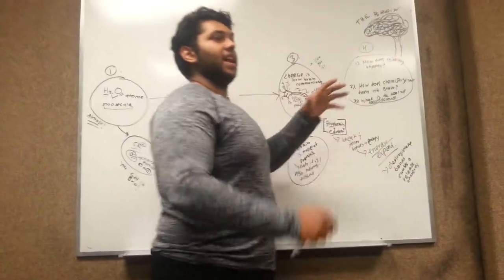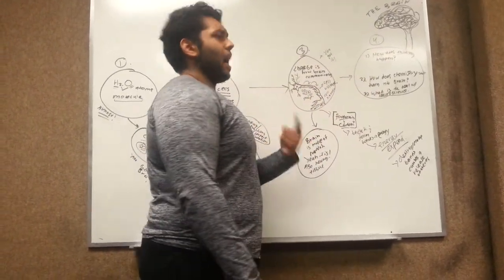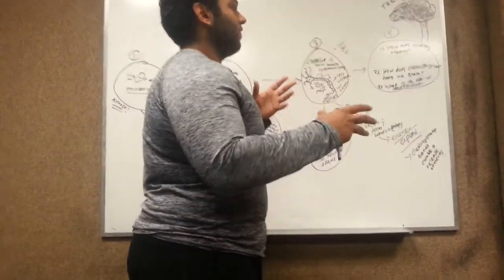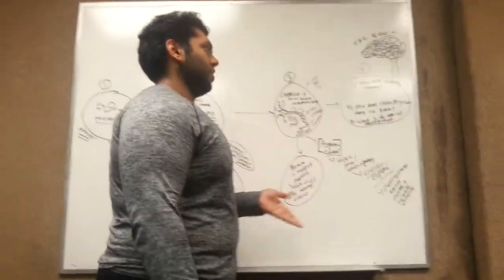So to kind of go on to the next and kind of broader last questions you had, you had three main questions. How does thinking happen, which is a very large question. How does chemistry fit into the brain and how does that deal with the brain? And what is the deal with neuroscience?